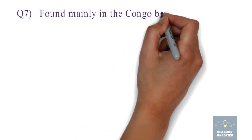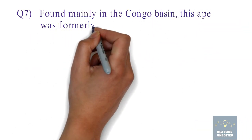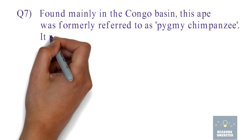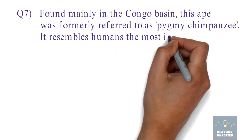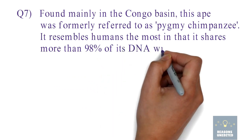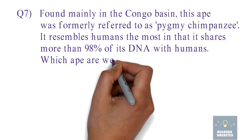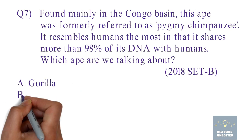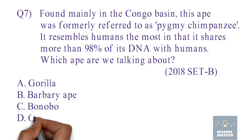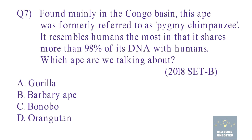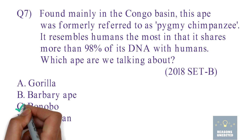Question 7. Found mainly in the Congo Basin, this ape was formerly referred to as the Pygmy Chimpanzee. It resembles humans the most in that it shares more than 98% of its DNA with humans. Which ape are we talking about? Option A: Gorilla. Option B: Barbary Ape. Option C: Bonobo. Option D: Orangutan. The correct option is Option C, Bonobo.